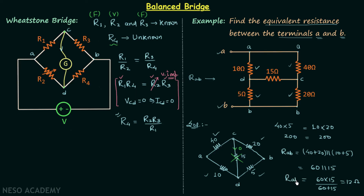So 12 ohms is our equivalent resistance. I hope all the points explained in this lecture are clear. The proof of the balanced condition is not required in this course — it is in 12th standard — and if you want the proof you may refer to any standard textbook for 12th class. I will end this lecture here; see you in the next one.